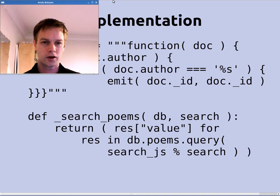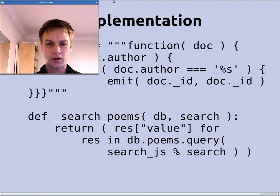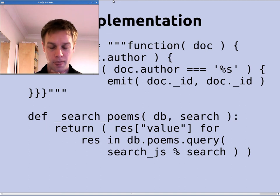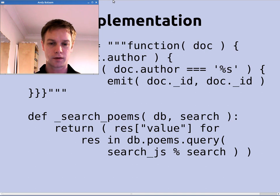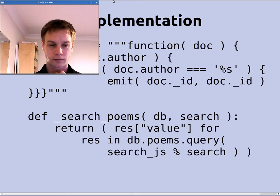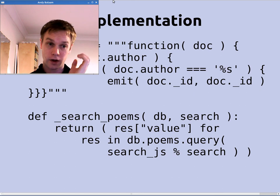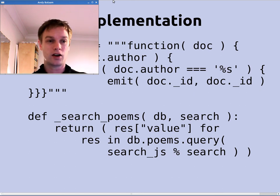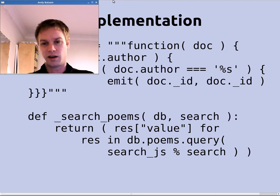Here's the actual searchPoems function — that was just a bit of JavaScript in a string up at the top. searchPoems takes in the database and the search term, and calls db.poems.query, passing in that JavaScript with the author name substituted in. It's basically saying: run this bit of JavaScript for all entries in the database with this author name substituted in. For everything found, we return the value — which is the ID of that document, the second argument to emit — basically the same as the first. We're just returning the ID of all the poems we find. We're using the .query function which runs a one-off index, uses it, and then throws it away.